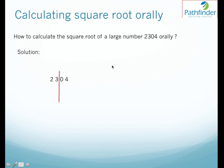Next, to calculate the square root, you should be aware of the squares of the first nine numbers that is 1 to 9. 1 square is 1, 2 square is 4, 3 square is 9, 4 square is 16, 5 square is 25, 6 square is 36, 7 square is 49, 8 square is 64 and 9 square is 81.